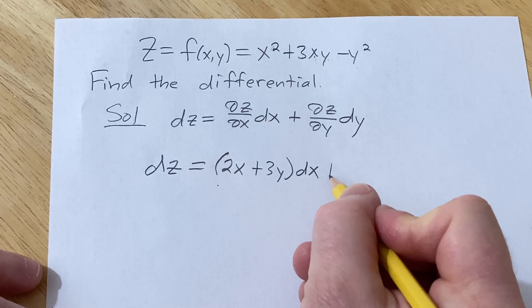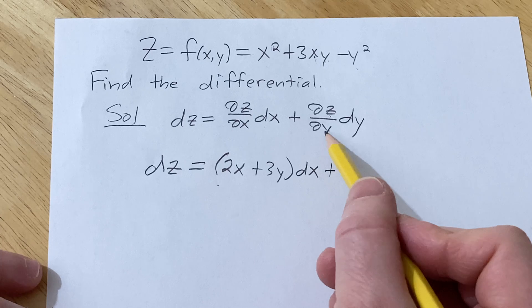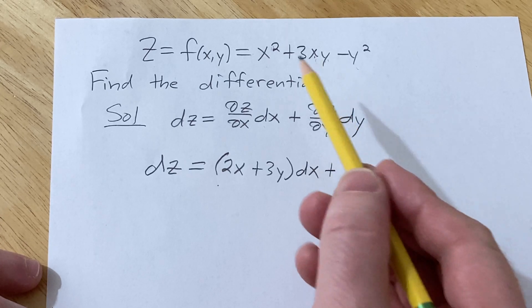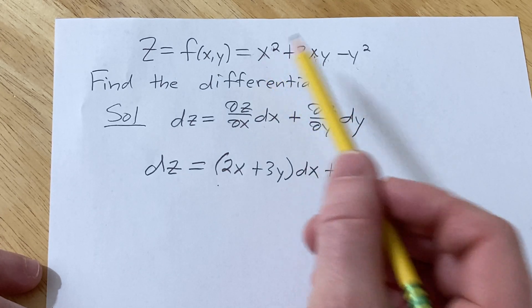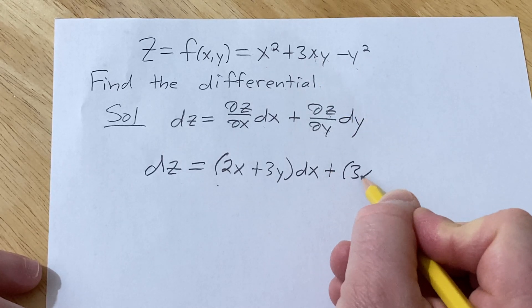Okay, plus ∂z/∂y. Same thing, except now all of our x variables are constants. So the derivative here will be 0. The derivative of y is 1, so we're left with 3x.